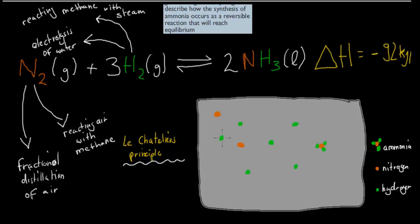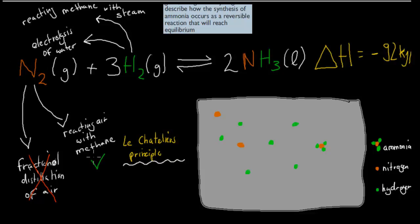In the last video, we talked about how we can make nitrogen gas and hydrogen gas — the building blocks of what we need to make ammonia. We said that we can make nitrogen gas either through fractional distillation of air or through the reaction of air with methane. Fractional distillation of air does not often get used because it's too expensive, whereas the reaction of air with methane is the common way to make nitrogen gas.